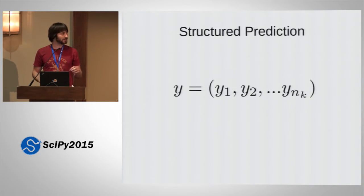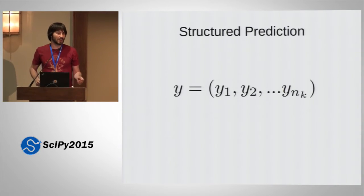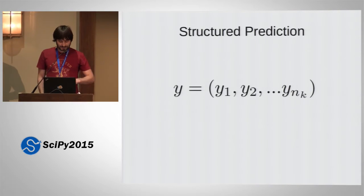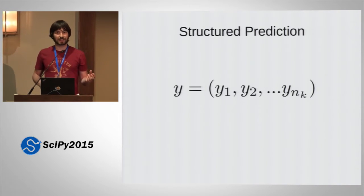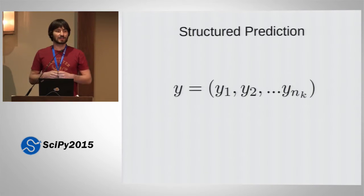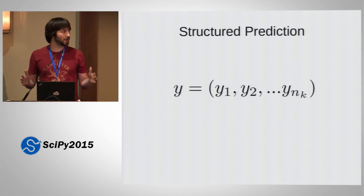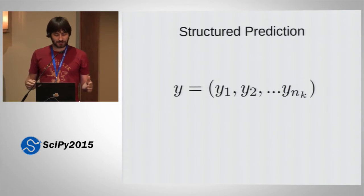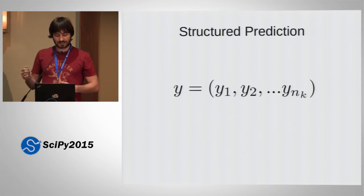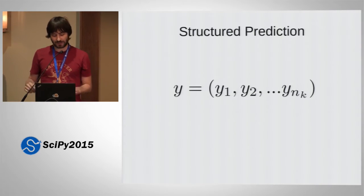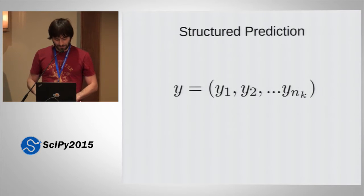Structured Prediction is a generalization of classification or other supervised learning techniques, in which you don't want to predict a single outcome, but rather a vector of outcomes. So your class label Y is a tuple of multiple labels, and the length of this tuple can vary per sample.